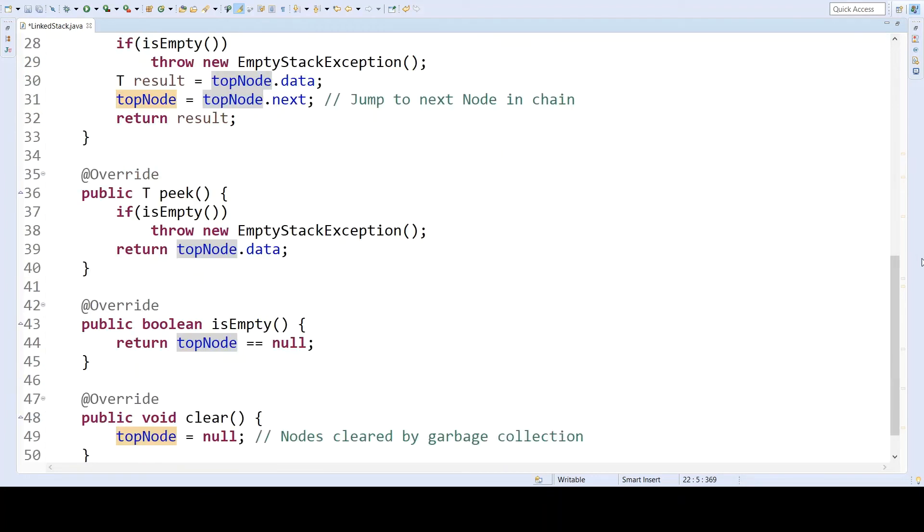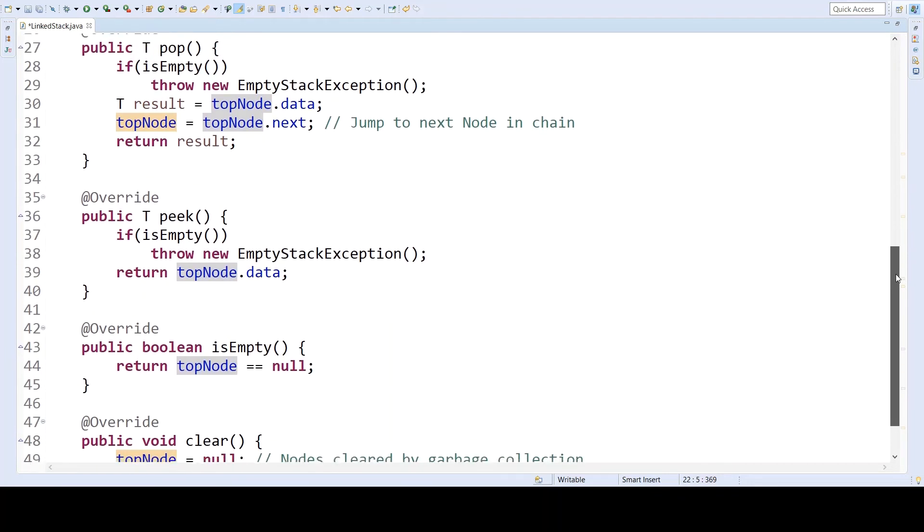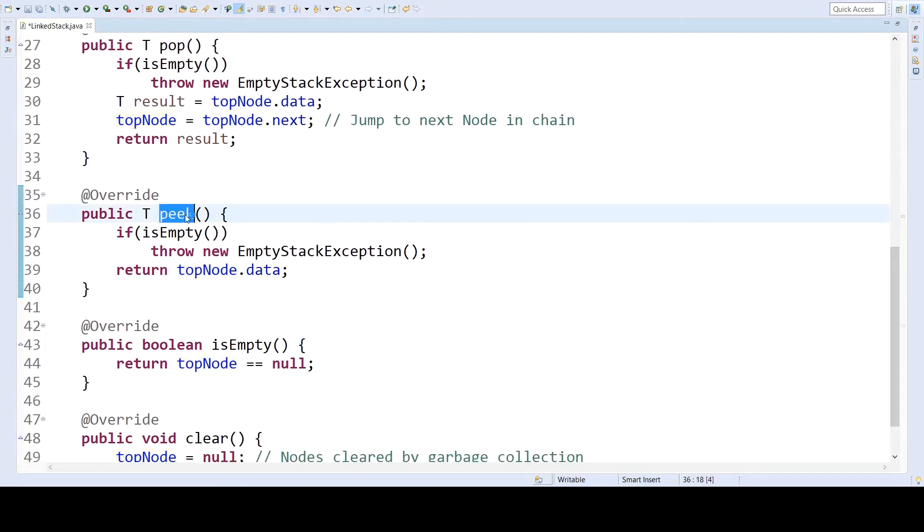Now pop is the method that removes the top of the stack, and peak simply looks at that top element. So peak is the simpler approach. Both of them check if the stack is empty. So if the stack is empty, then we throw an empty stack exception, just as we did with the array stack. In the case of peak, all we're doing is returning the value of top node.data. In the case of pop, we have to first save that result in a temporary variable result before then modifying the stack and then returning our saved result.